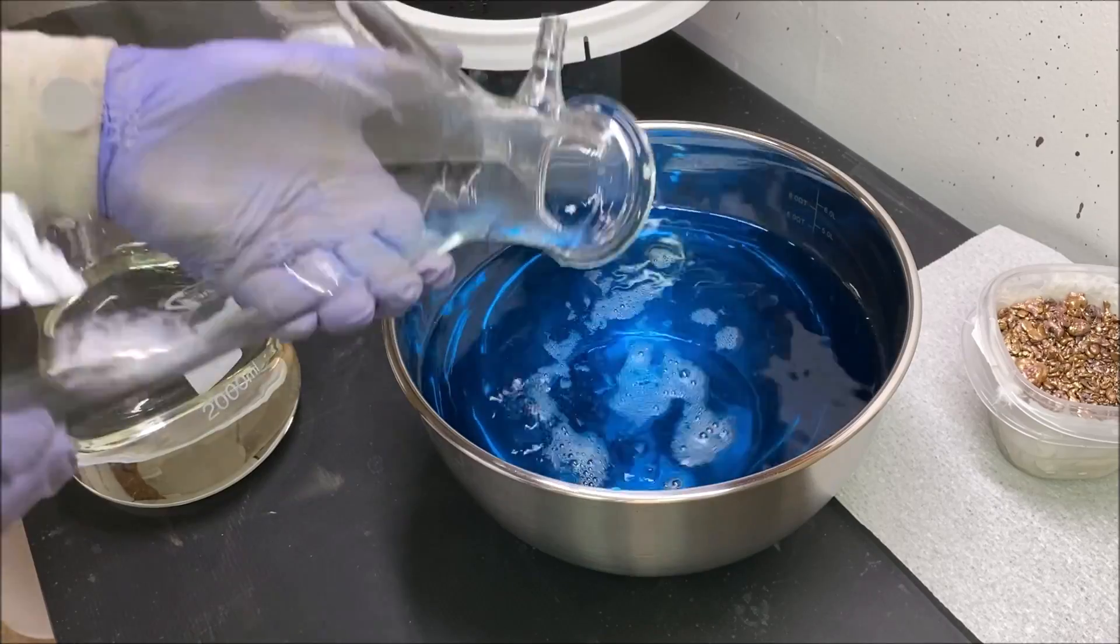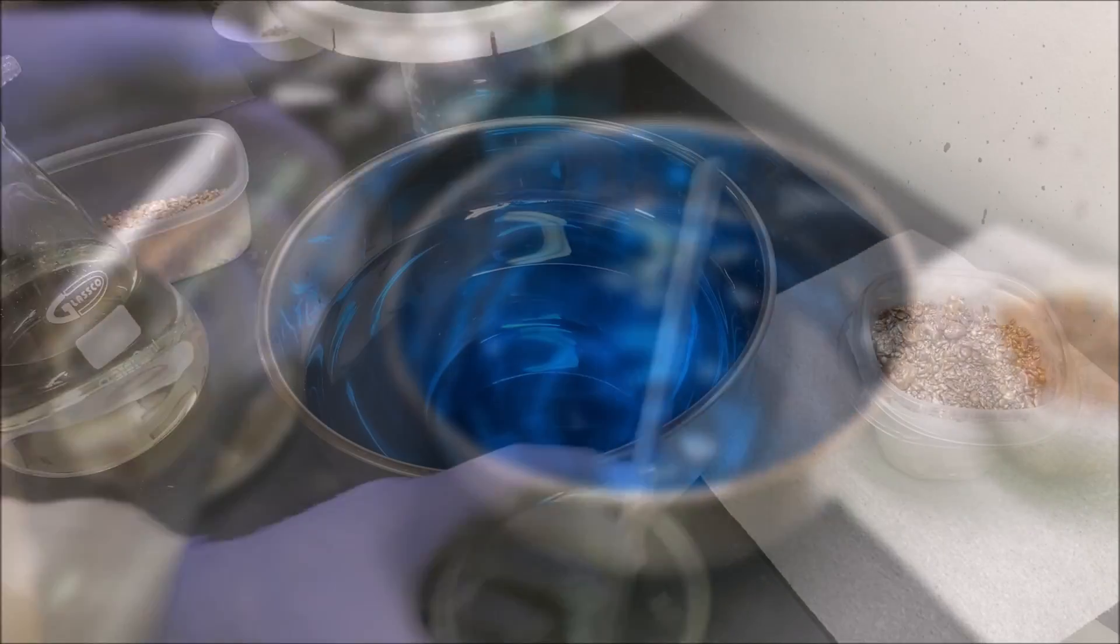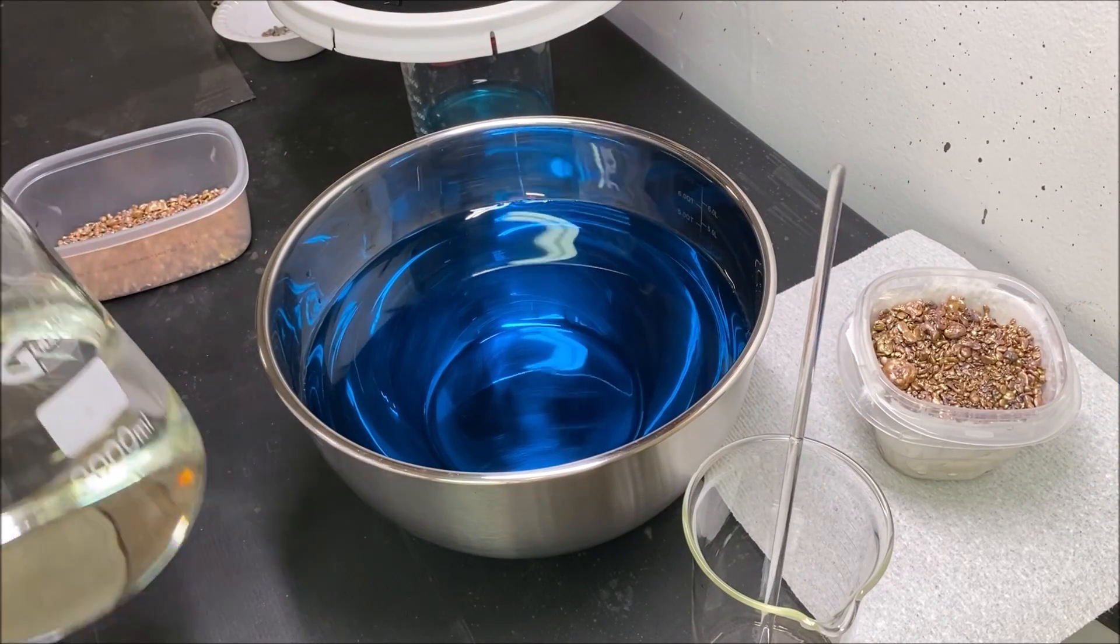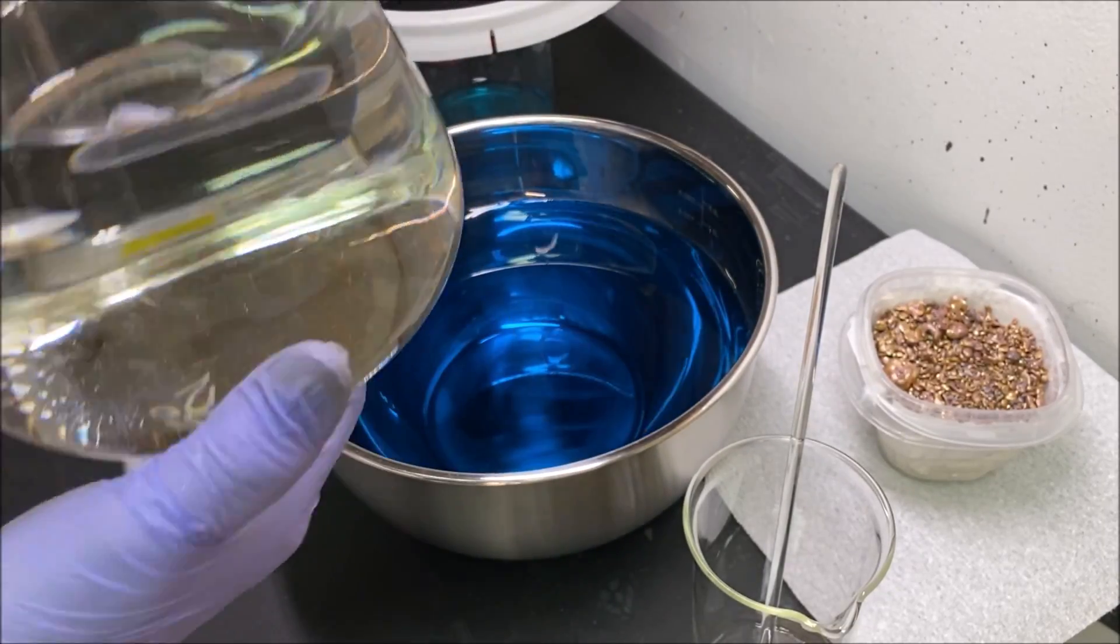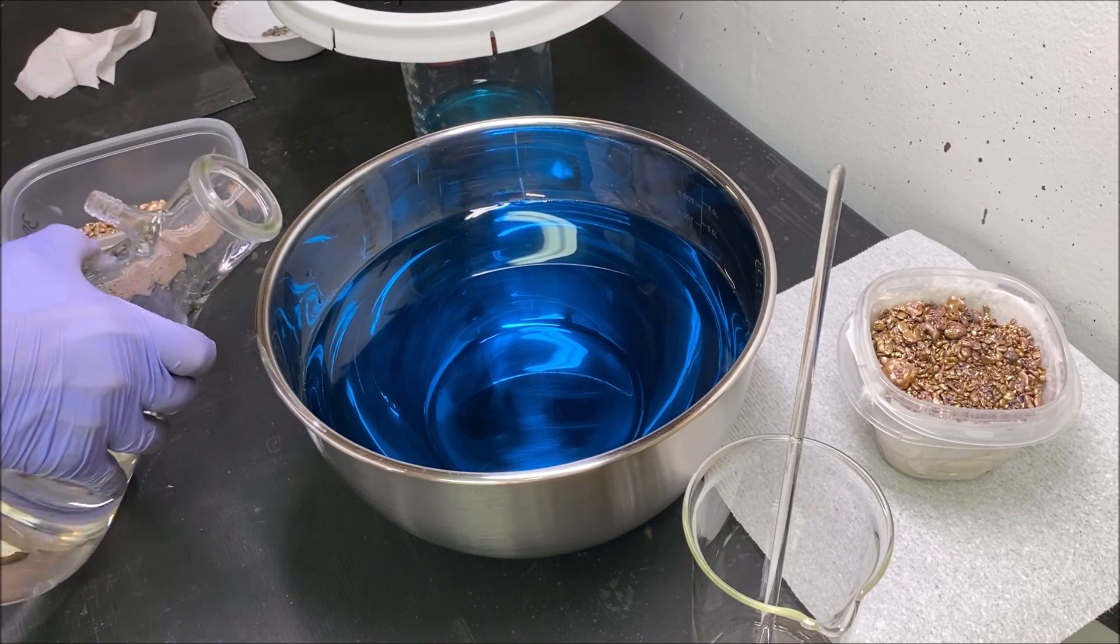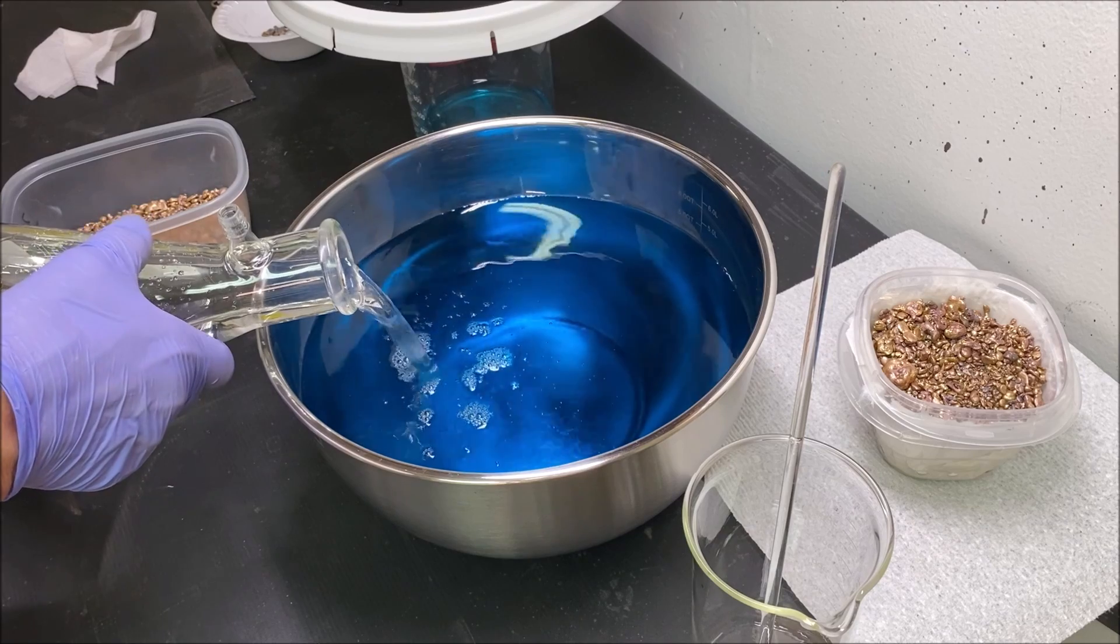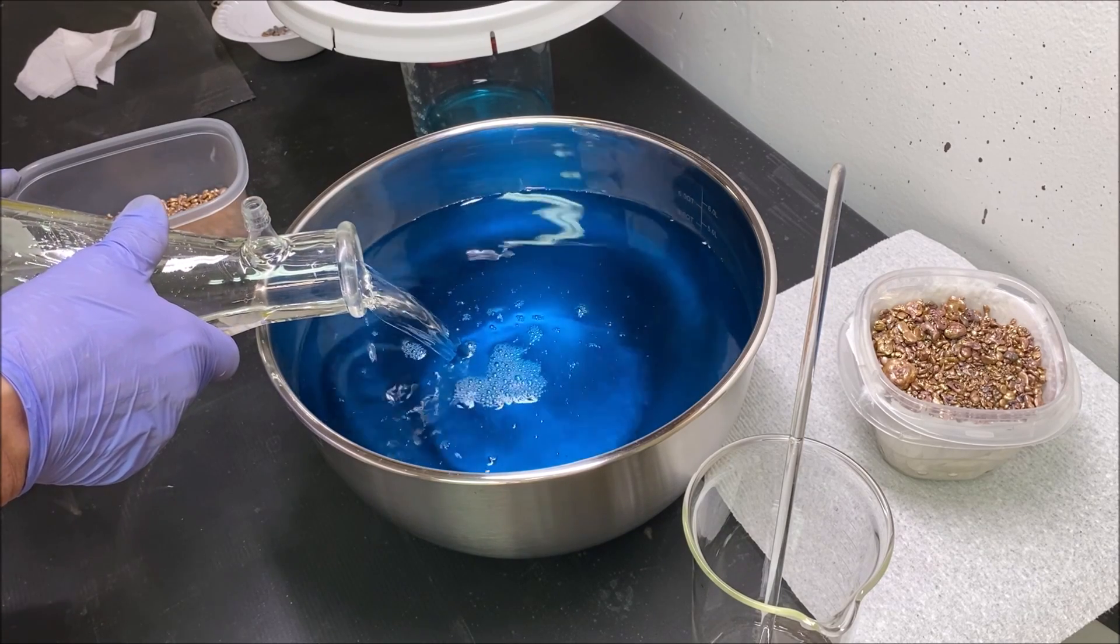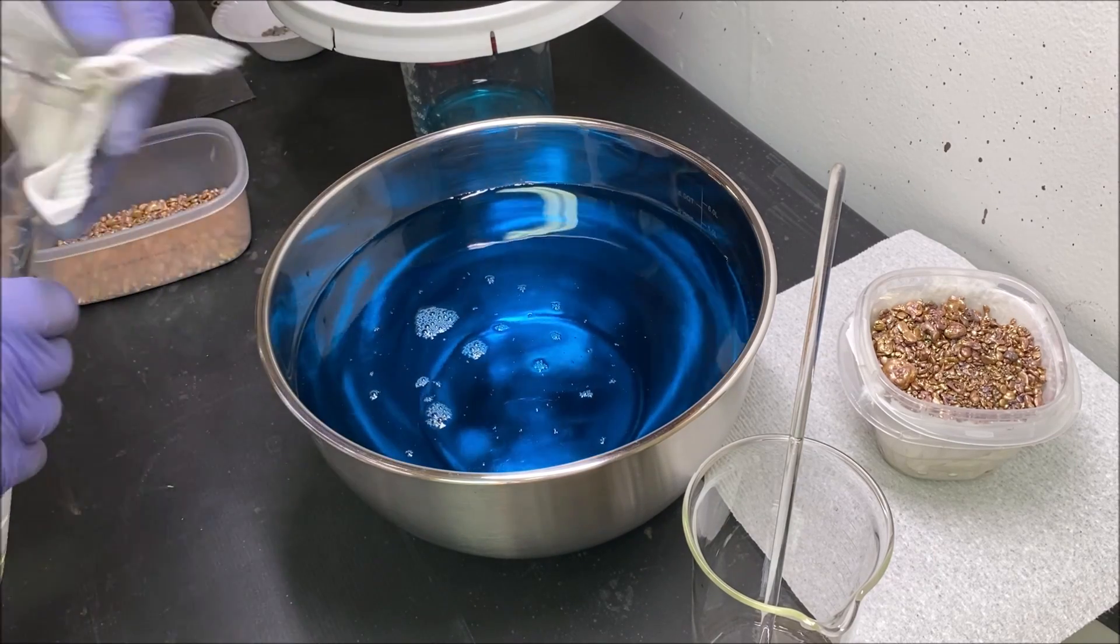Now what I'll do is add some of this fresh silver nitrate that we just made. I'm going to pour a little over half of this in. Now what we'll do is add distilled water until it gets to the six liter mark in here.